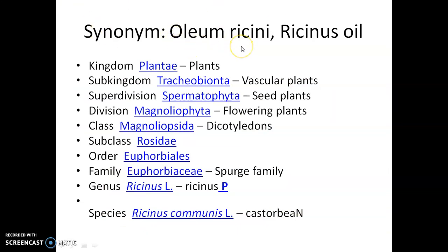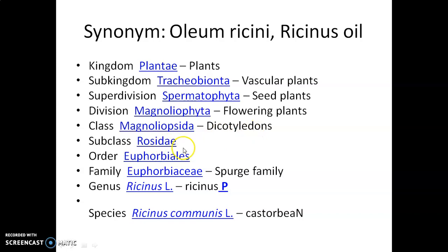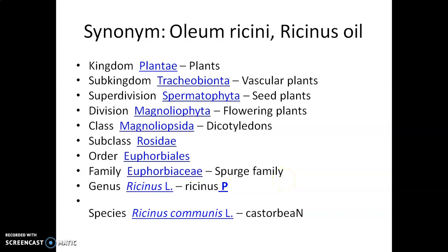The synonym of castor oil is oleum ricini or Ricinus oil. It is obtained from the Euphorbiaceae family plant Ricinus communis. The taxonomic profile: Kingdom Plantae, Superdivision Spermatophyta (seed-bearing plant), Division Magnoliophyta (flowering plant), Class Magnoliopsida, Subclass Rosidae, Order Euphorbiales, Family Euphorbiaceae — also known as the parch family, characterized by secretion of milky latex-like liquid. Genus is Ricinus and the species is Ricinus communis L.